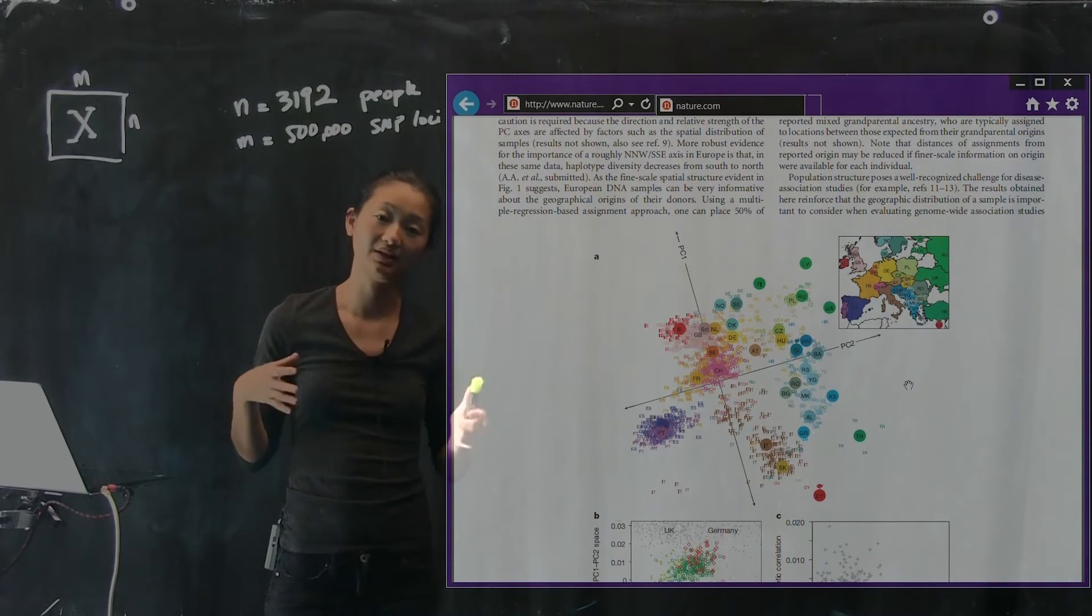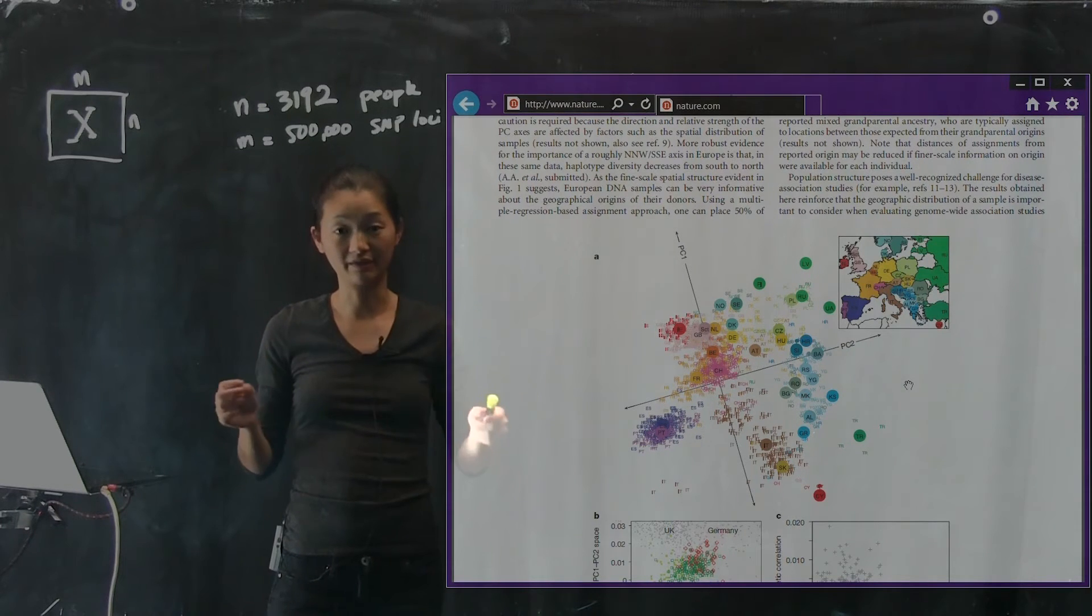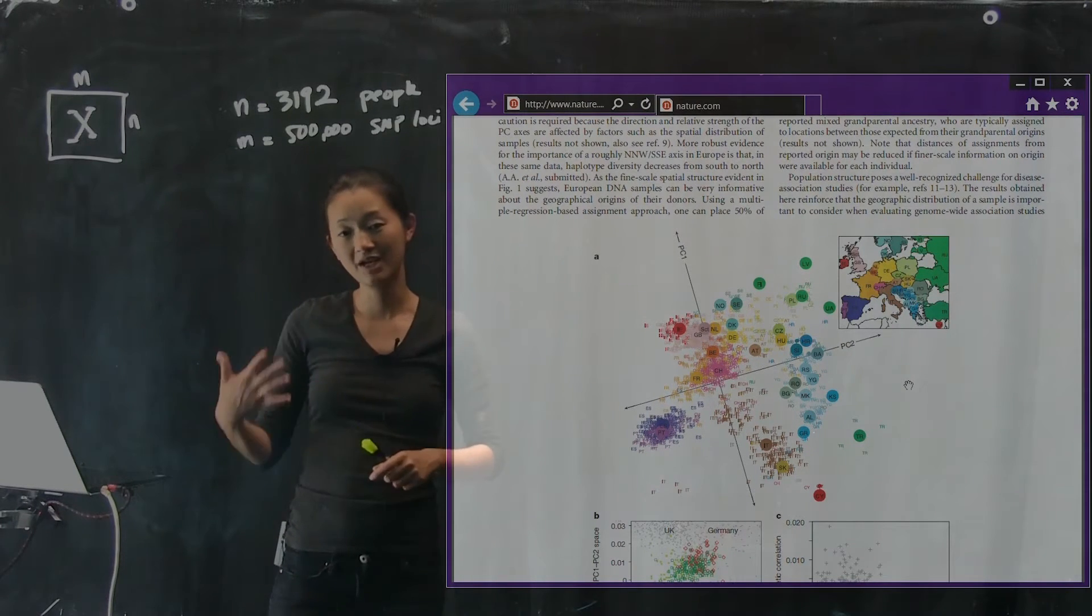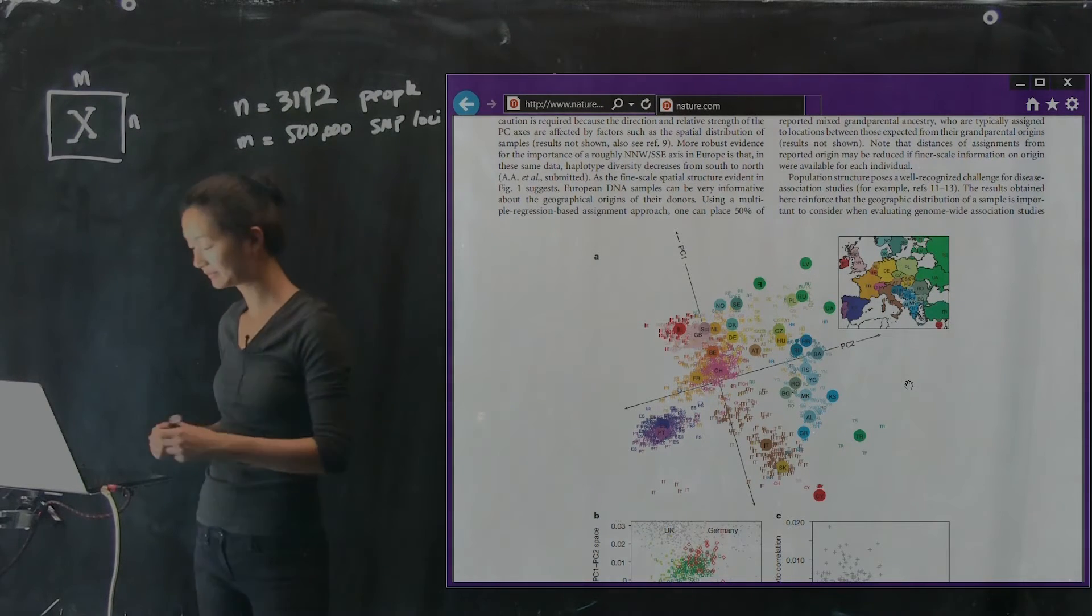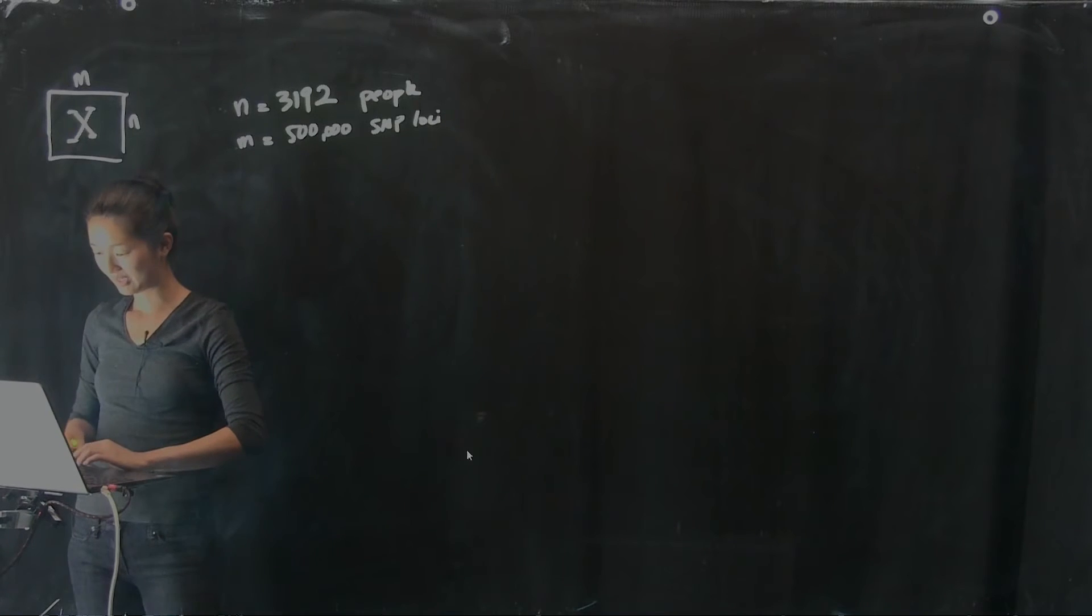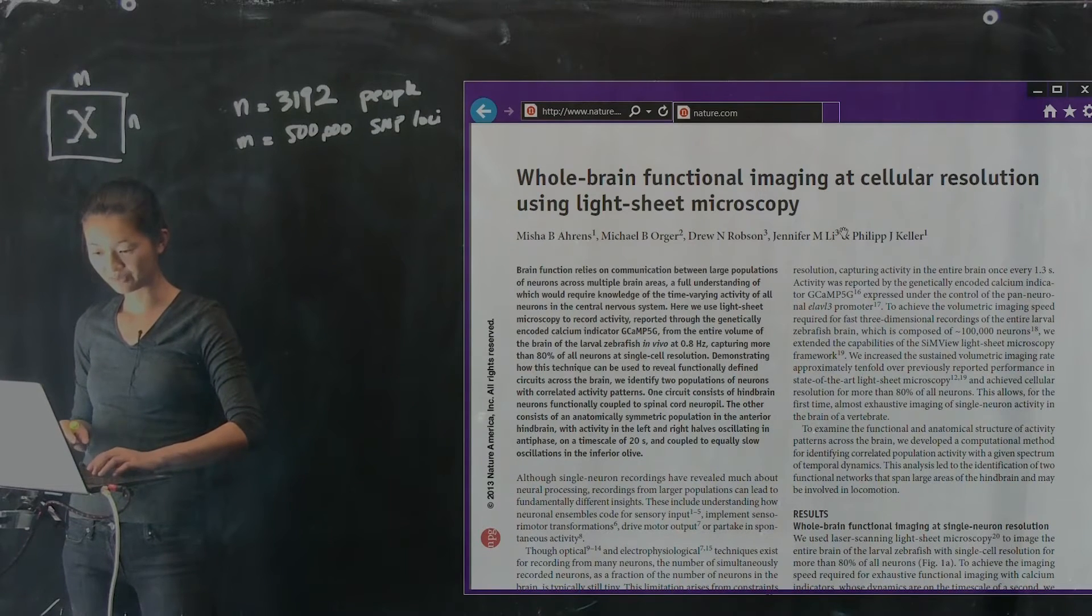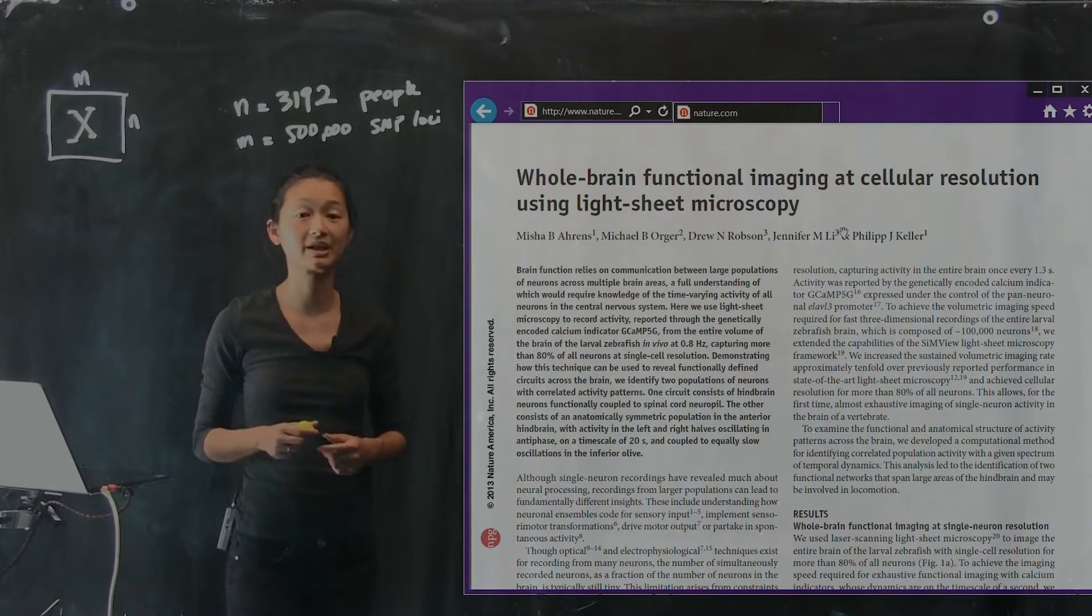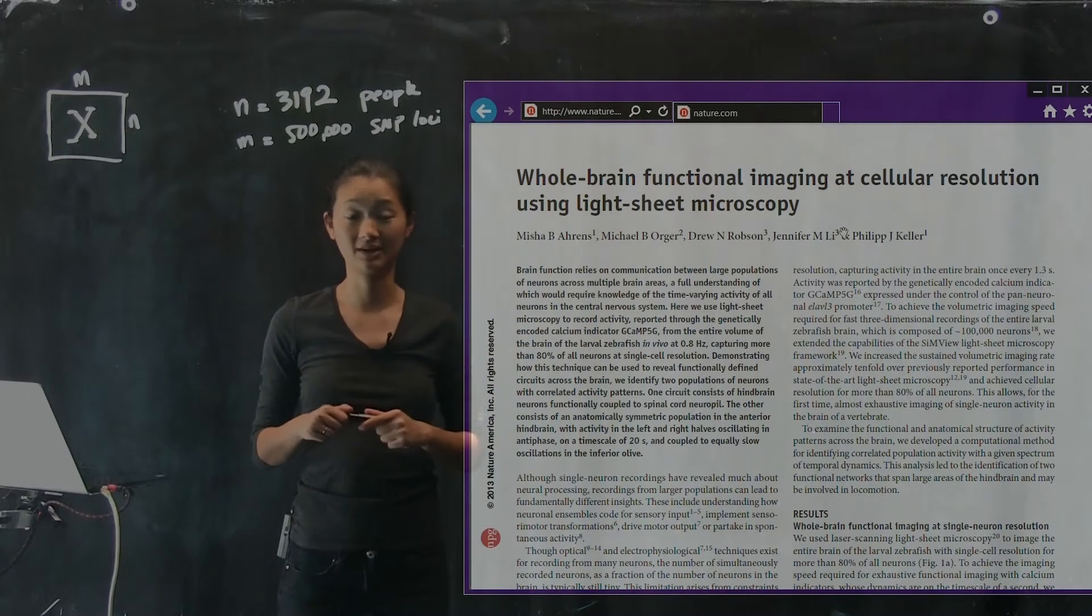And so that's one thing that we can do with very high dimensional data sets of one particular type. So here, what they've done is collect data over a lot of different people over a lot of different measurements. Okay? So next, what I'm going to show you is a completely different type of data set that is also high dimensional.